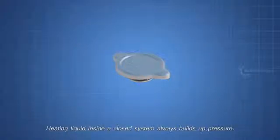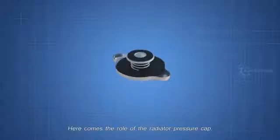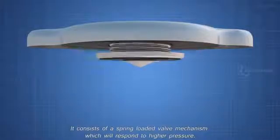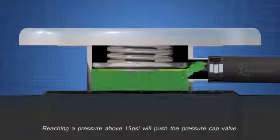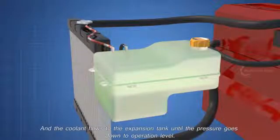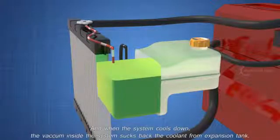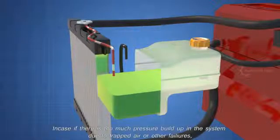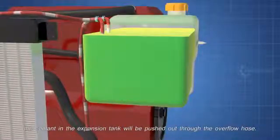Heating liquid inside a closed system always builds up pressure. So how to maintain the pressure? Here comes the role of the radiator pressure cap. It consists of a spring-loaded valve mechanism which will respond to higher pressure. Reaching a pressure above 15 PSI will push the pressure cap valve, and the coolant flows to the expansion tank until the pressure goes down to operation level. And when the system cools down, the vacuum inside the system sucks back the coolant from expansion tank. In case if there is too much pressure build up in the system due to trapped air or other failures, the coolant in the expansion tank will be pushed out through the overflow hose.